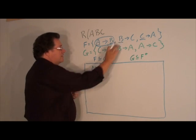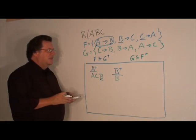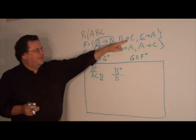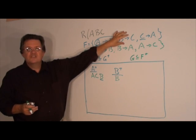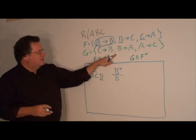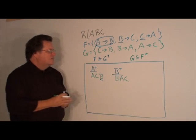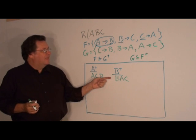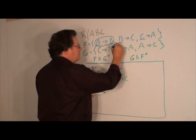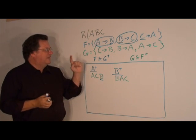Next, we look at B closure with respect to G. By reflexivity it includes B. Then B→A, and A→C. So B closure is A, B, C. The right-hand side C is within B closure, therefore the functional dependency B→C will be in G closure.